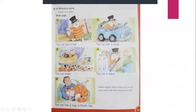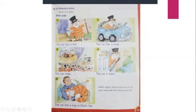This is the second page of lesson 29 — a phonics story about a cat. Read and listen: The Cat. Number one: the cat has a hat. Cat — short A sound. Hat — A sound. Number two: the cat has a map. Map — A sound in the middle. Number three: the cat claps. Claps — A sound.